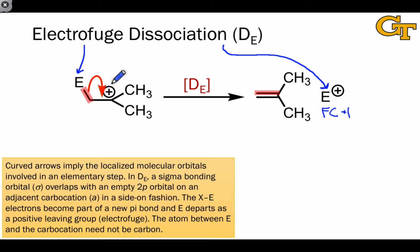D sub E often occurs at sigma bonds adjacent to cationic atoms, and the electron flow here is a sigma to A type orbital interaction. Notice that a pi bond is formed as a result of this interaction.